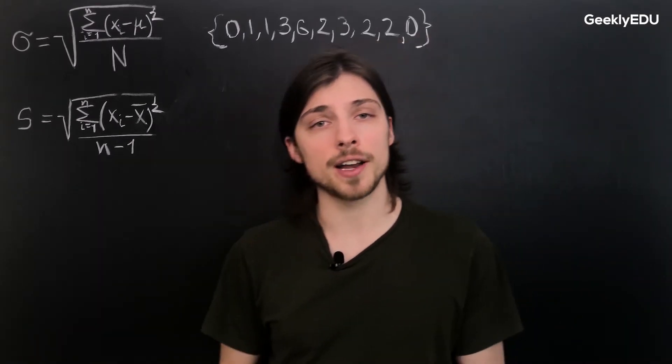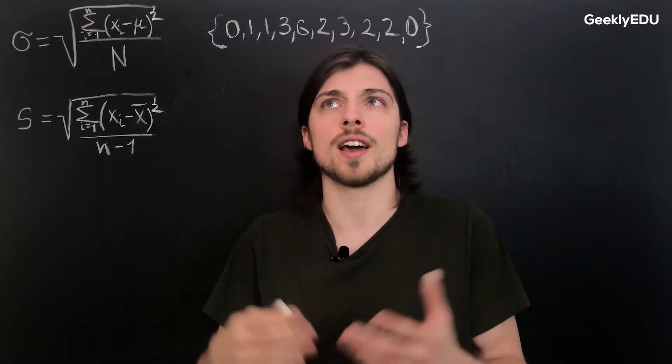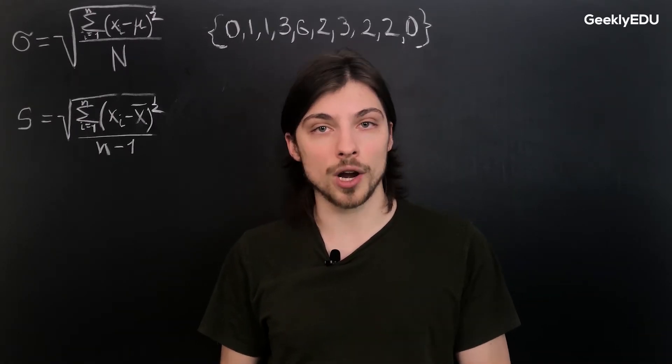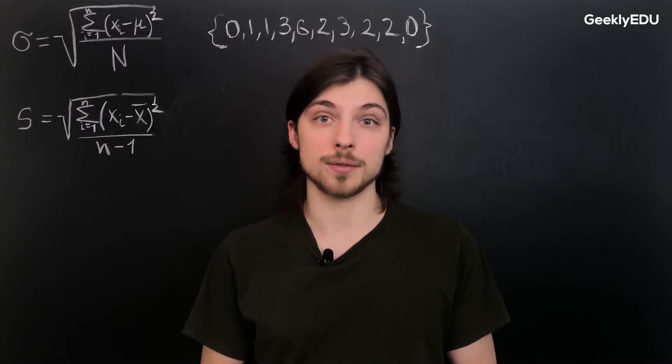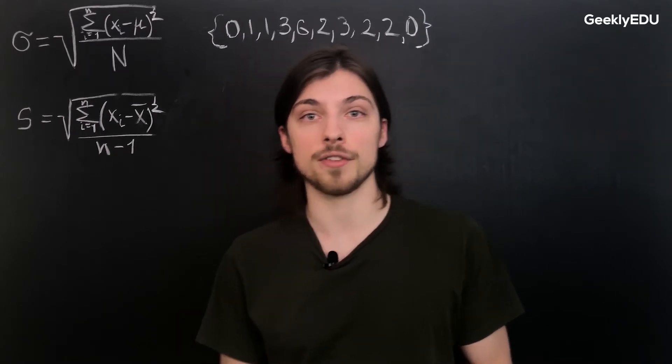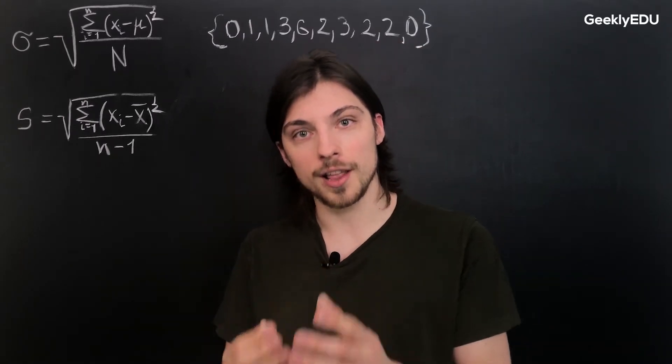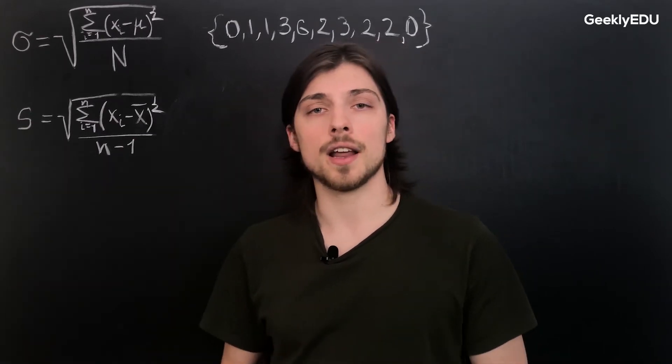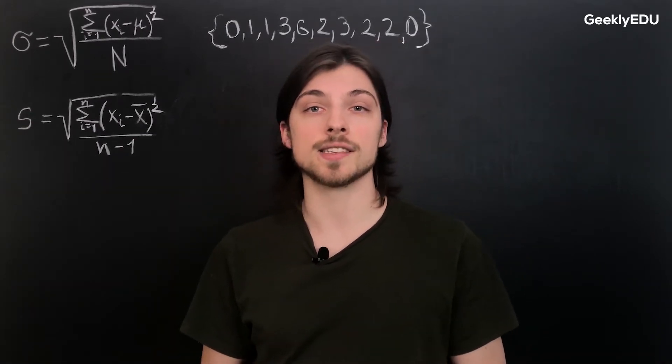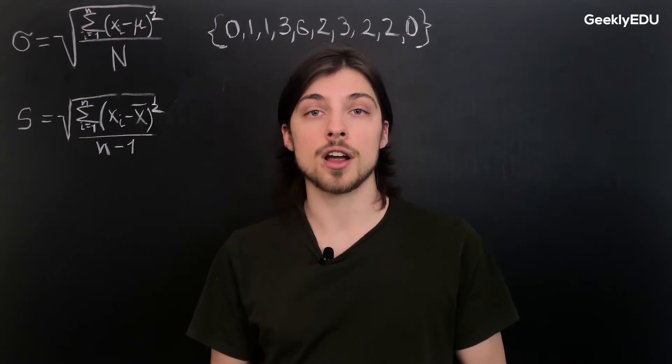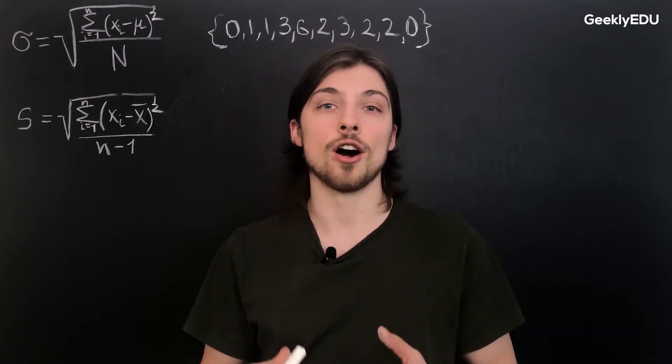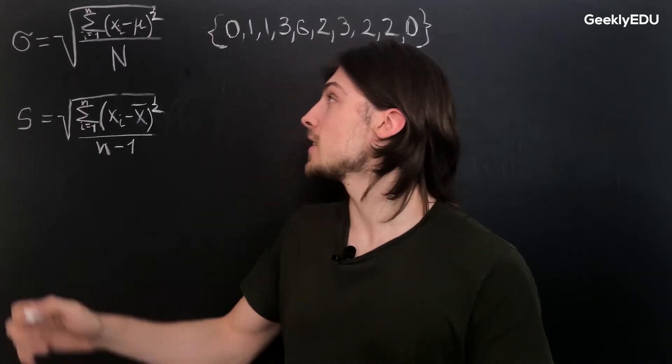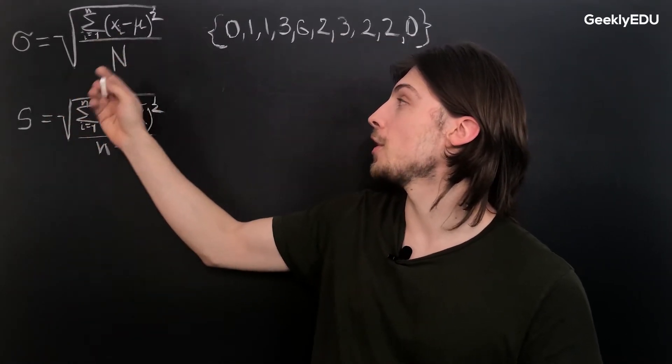So first let's start by defining standard deviation and what it actually is. Now the standard deviation is the square root of the variance. You cannot talk about standard deviation without variance - it's at the heart of the thing itself. Now what variance is, is essentially the average of the squares of deviations in a data set. So this is expressed as this formula over here.